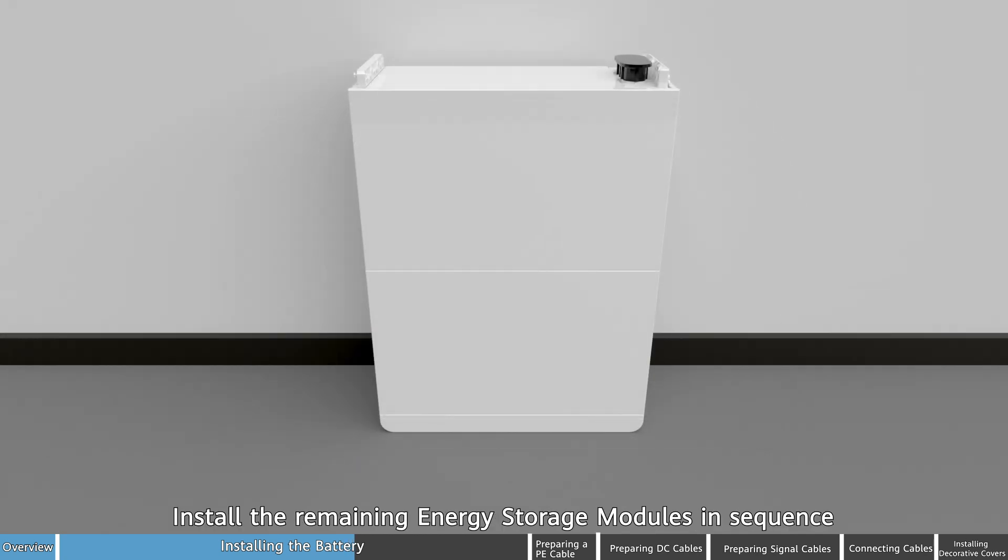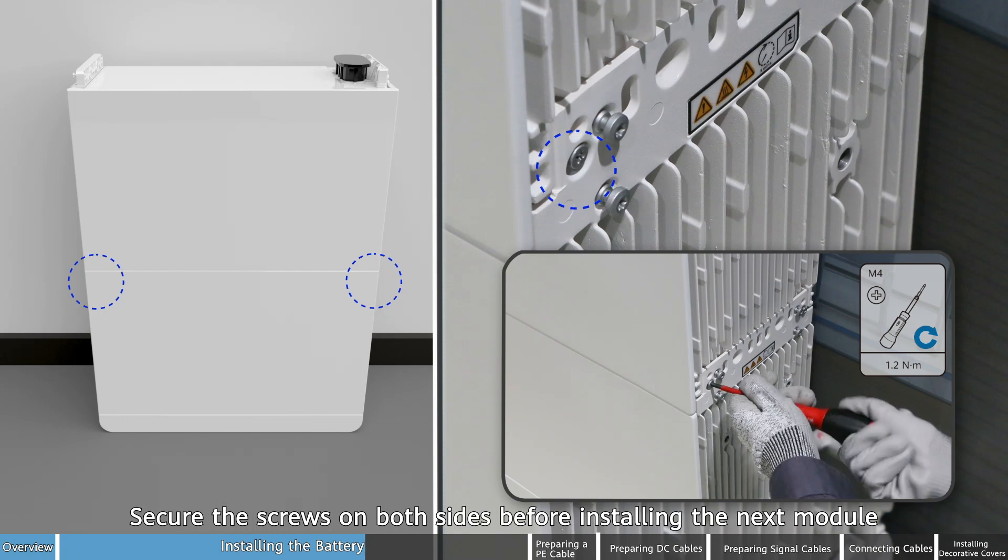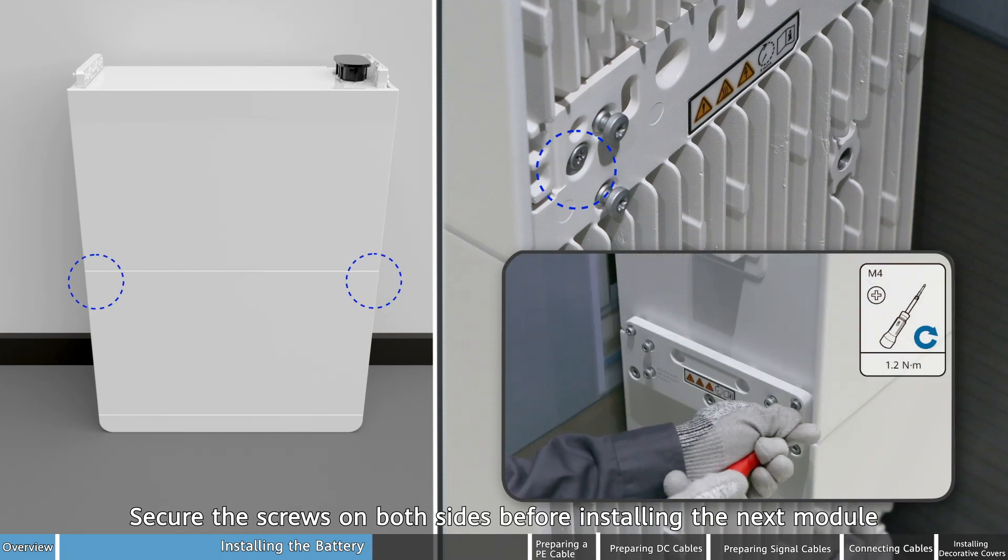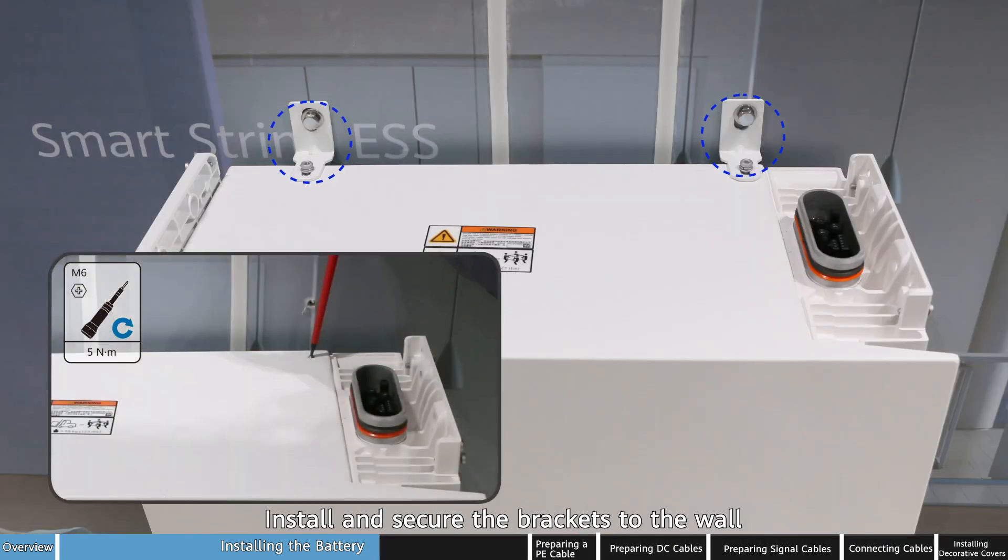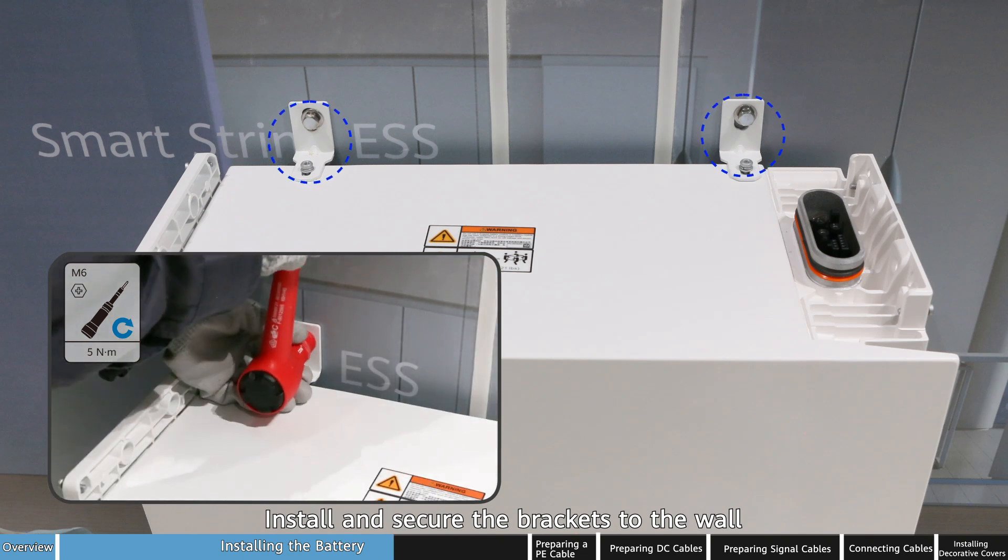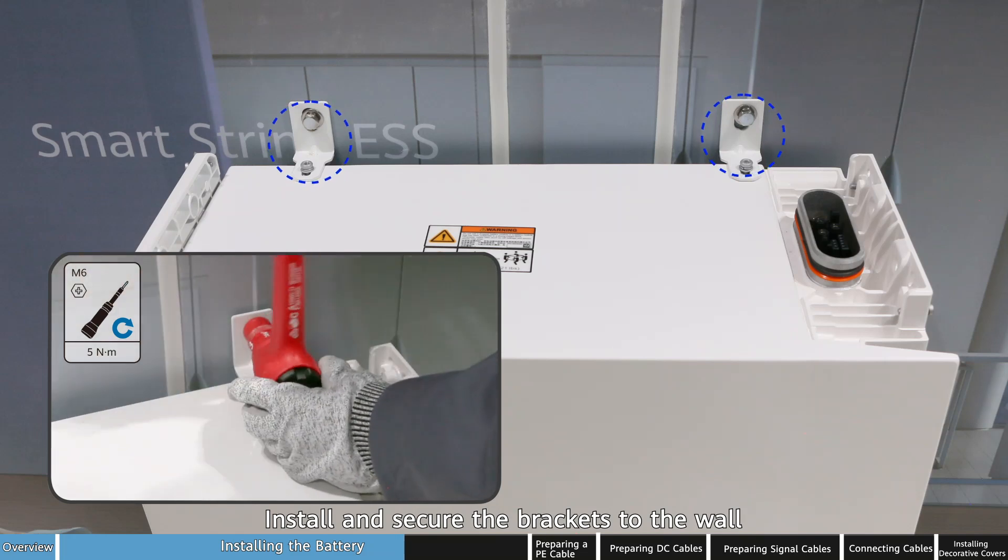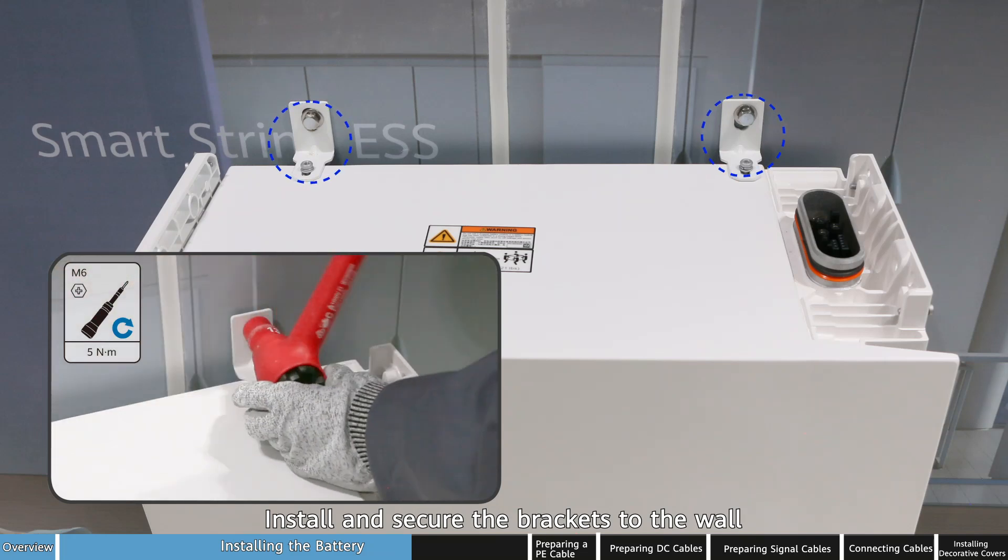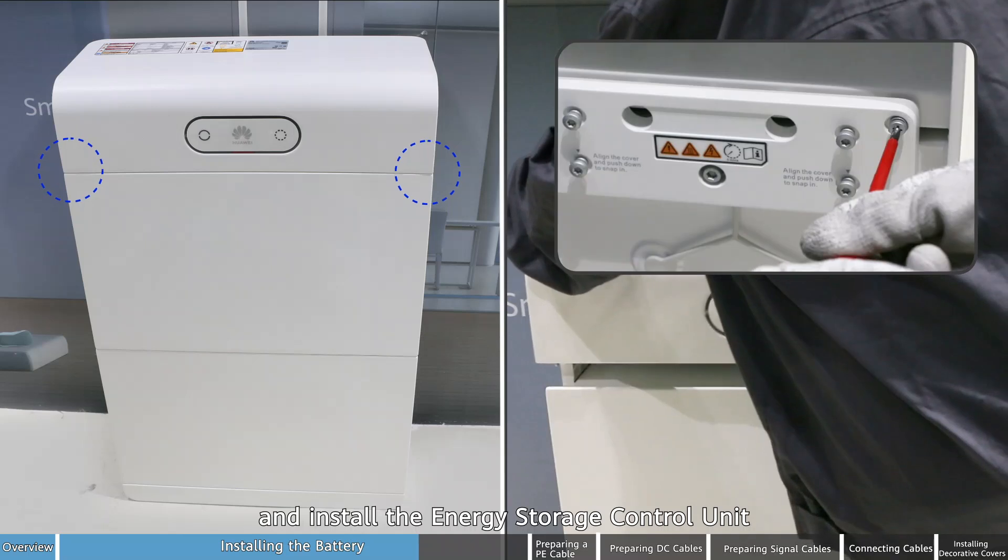Install the remaining energy storage modules in sequence. Secure the screws on both sides before installing the next module. Install and secure the brackets to the wall and install the energy storage control unit.